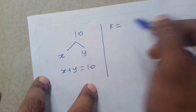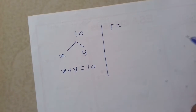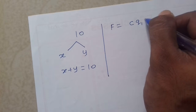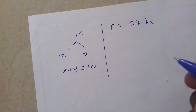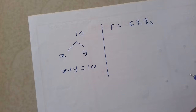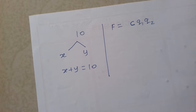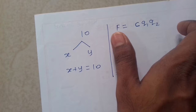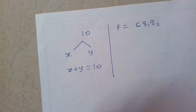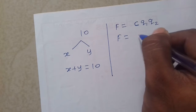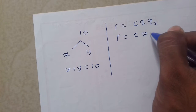Force between two charges ka formula hai: some constant into first charge into second charge. This constant is one upon four pi epsilon not. Actual formula is one upon four pi epsilon not, q1 q2 upon r square. All other parameters are constant, therefore unko c likha hai. So force = constant into q1 q2, i.e., the function equals constant into first charge x and second charge y.